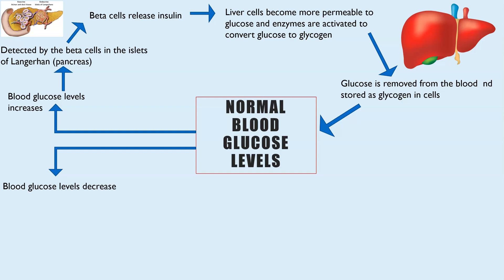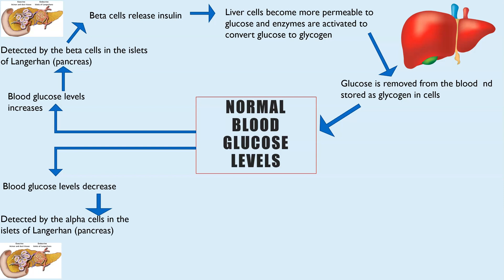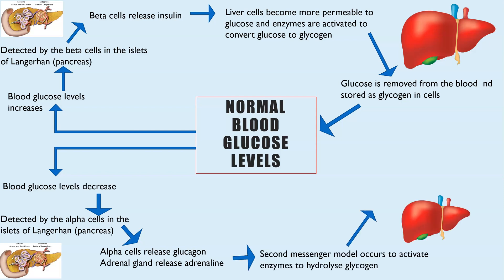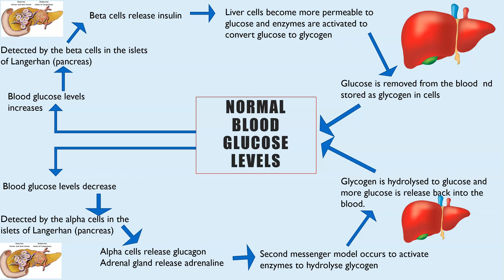In contrast, if blood glucose levels decrease — perhaps you haven't eaten for a long time or you've done a lot of exercise — this is detected by receptors in the islets of Langerhans, but this time it's the alpha cells. The alpha cells respond by releasing glucagon, and the adrenal glands also release adrenaline. These hormones are transported in the blood to the liver cells, where they activate the second messenger model, causing enzymes to hydrolyze glycogen back into glucose, which is then released into the blood.